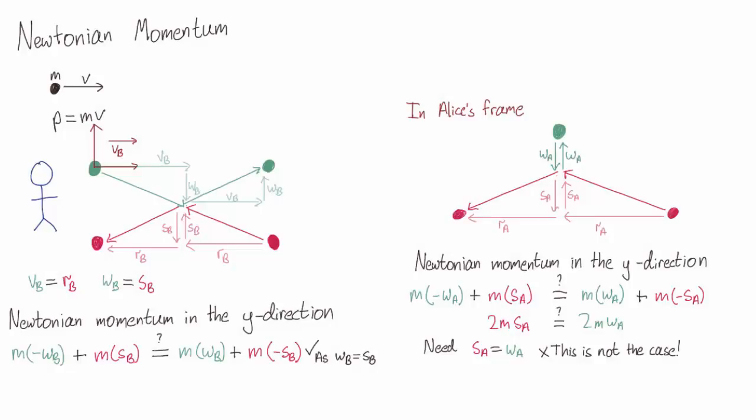In Bob's frame, the red and green balls have the same up and down velocity. Alice is matching the green ball's horizontal speed, so from her point of view it's not moving horizontally and she sees it going up and down at full speed. The pink ball, however, is moving towards her, so time dilation means Alice measures its vertical velocity to be slower. Thus sa is smaller than wa, and Newtonian momentum is not conserved in the y direction.